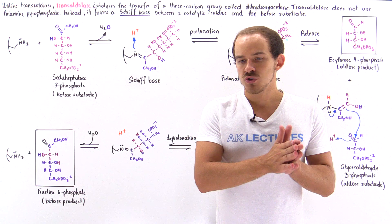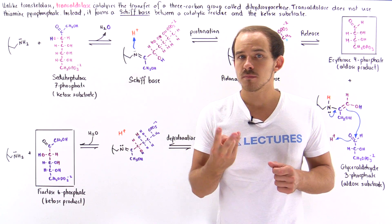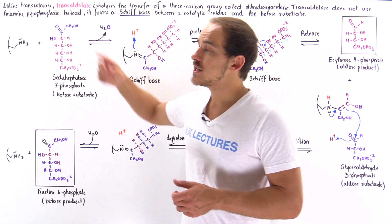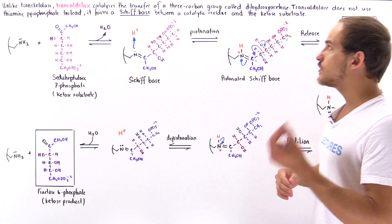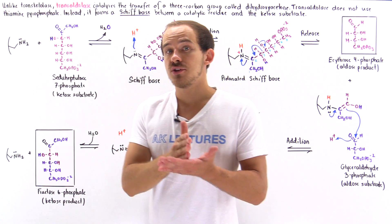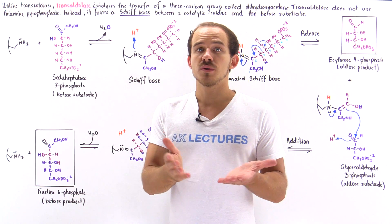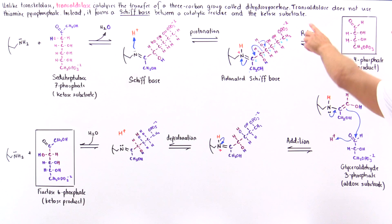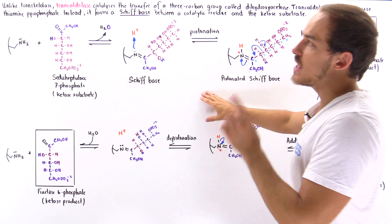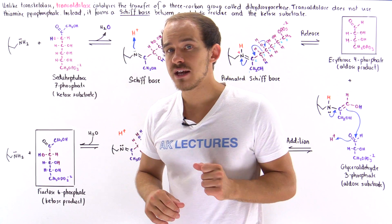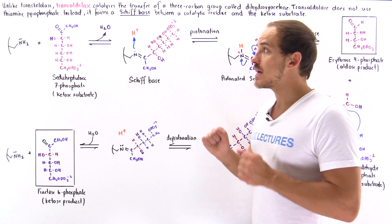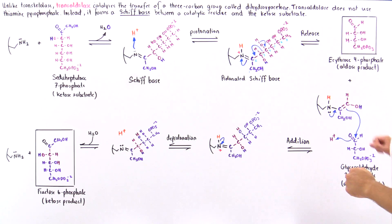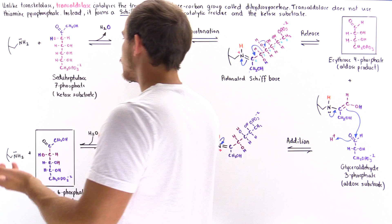Unlike transketolase, which catalyzes the movement of a two-carbon group, transaldolase actually catalyzes the transfer of a three-carbon molecule known as dihydroxyacetone. And unlike transketolase, which uses a cofactor molecule known as thiamine pyrophosphate, transaldolase does not use that cofactor. Instead, it forms a Schiff base between the catalytic lysine residue in the active site of the enzyme and the incoming ketose substrate molecule. Let's take a look at the details of the reaction mechanism.